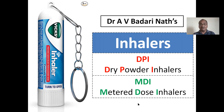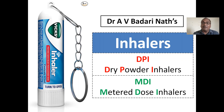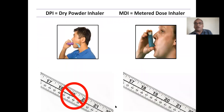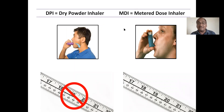We will see what this is — very interesting inhalers. Everybody knows regarding tablets, how to prepare tablets, how to prepare capsules. But intelligent students will focus on these types of formulations which are hidden, not much popular. Inhalers are two types: dry powder inhalers and MDI, metered dose inhaler.